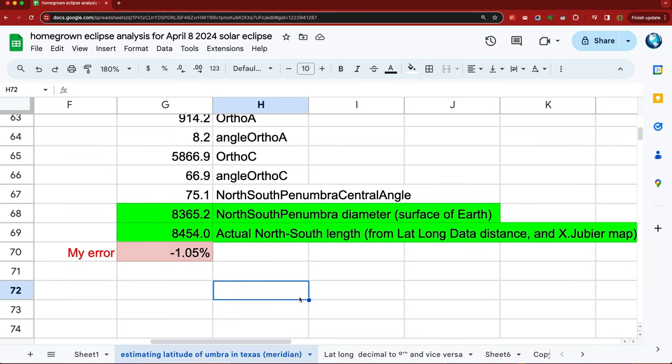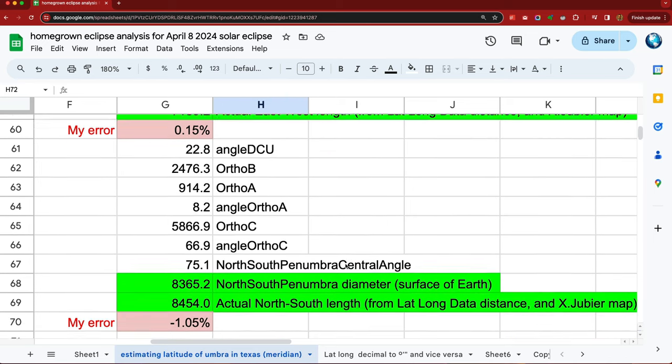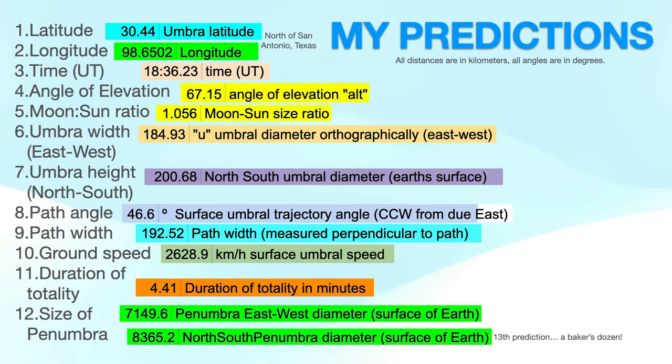So those were my 13 predictions because it was two predictions for the penumbra. So that was a quick tour of the spreadsheet. And here I'm just summarizing everything on one screen. These little colored bands are just screenshots from my spreadsheet.